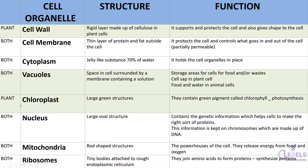Next we have chloroplasts, which are also specific to the plant cell. They are large green structures containing the green pigment chlorophyll, which is essential for photosynthesis — the process by which plants get their energy. Chlorophyll is responsible for absorbing sunlight from the sun, which is why plants need chloroplasts. They are present only in plants.